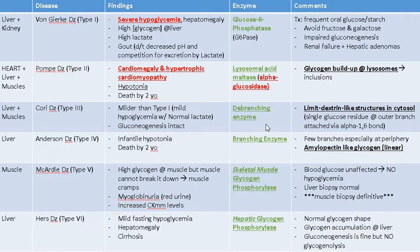Always Google histological images for these diseases since a picture may appear on the exam. To summarize the distinction: Cori's (Type 3) presents like Type 1 but with mild hypoglycemia, normal lactate, and intact gluconeogenesis, whereas Von Gierke's (Type 1) has severe hypoglycemia, high lactate, and impaired gluconeogenesis.